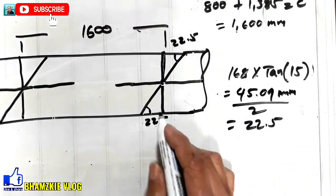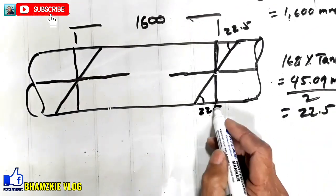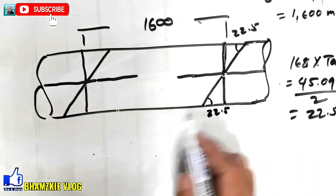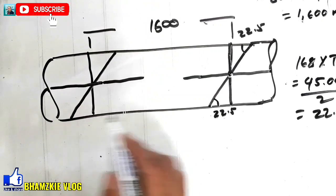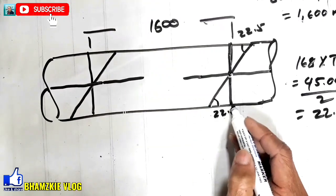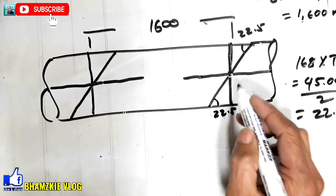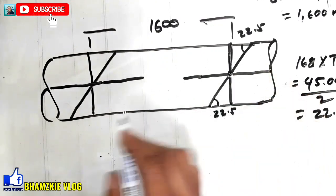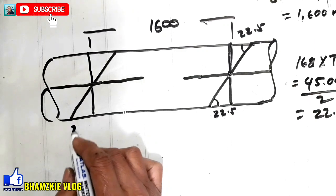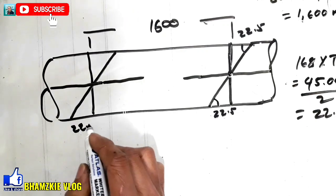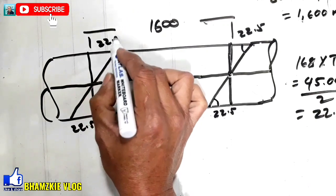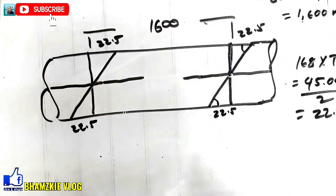Yung bawat measurement niya dito. So, dito naman, parehas lang. Parehas lang din yung process. Kung ano yung measurement dito, ganon din dito, 22.5. Yan. 22.5 din.